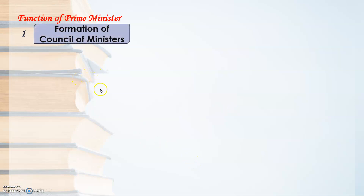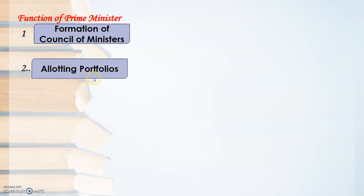Functions of the Prime Minister: The most important function is the formation of the Council of Ministers. When the Prime Minister is selected, he appoints various ministers — Department Minister, Health Minister, Education Minister — these are called Council of Ministers. Next is allotting portfolios, meaning each minister is given a specific department. For example, Minister A is given the Health Department, Minister B the Education Department. That allotment of work is called portfolios.